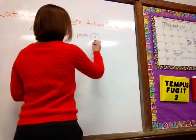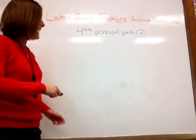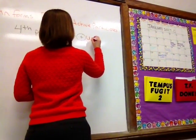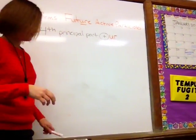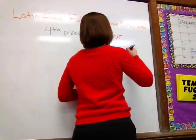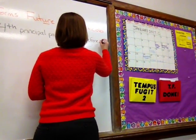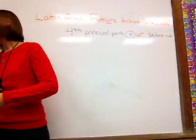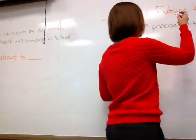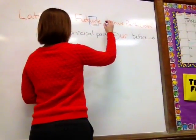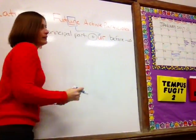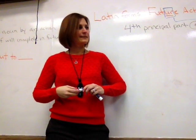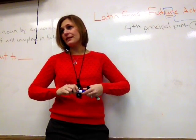Then you're going to add — that's an addition sign — you're going to add the letters U-R before the U-S. Which is super convenient because the word 'future' has U-R in it, and you add the letters U-R to make it a future. Easy peasy, lemon squeezy.